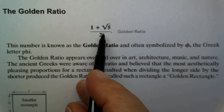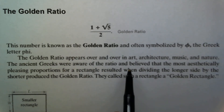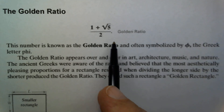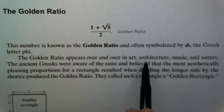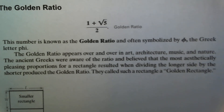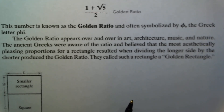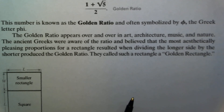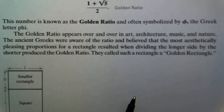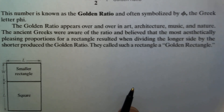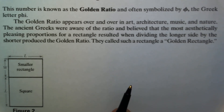The expression (1 plus square root of 5) divided by 2 is known as the golden ratio. This number has been known for thousands of years and is also symbolized by the Greek letter phi. The golden ratio appears over and over again in art, architecture, music, and nature. The Greeks believed the most aesthetically pleasing proportions for a rectangle resulted when dividing the longer side by the shorter side produced the golden ratio, calling such a rectangle the golden rectangle.